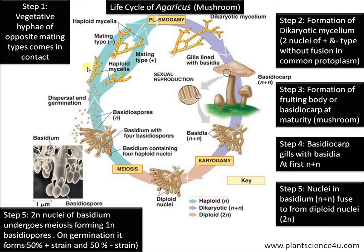On falling on a suitable substratum, the basidiospores germinate — half of which form the plus mating type and half of which form the minus mating type, thus completing the life cycle.